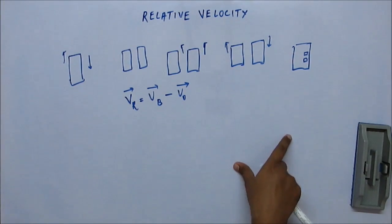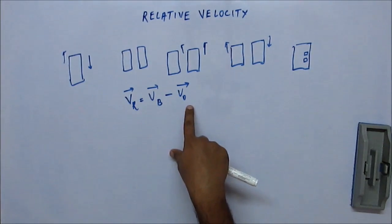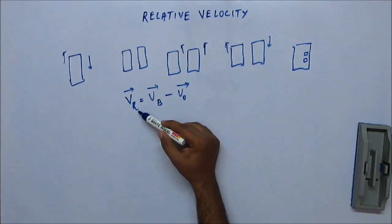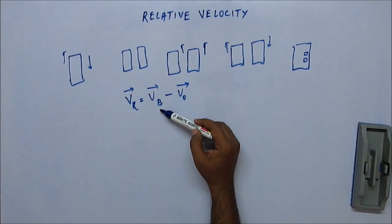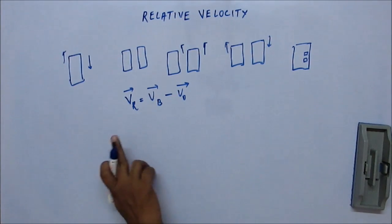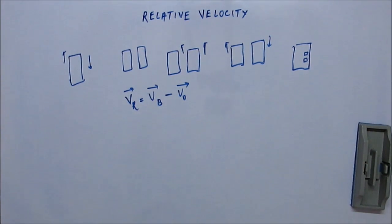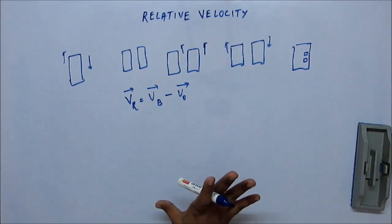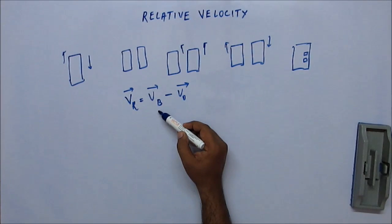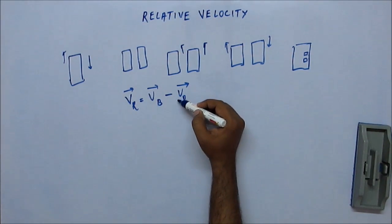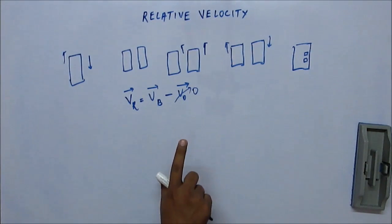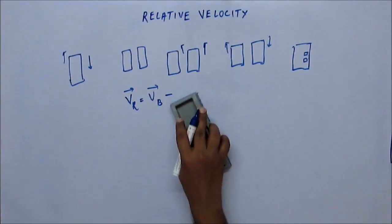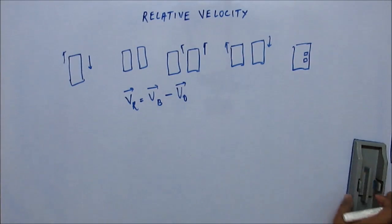Let's cross-check this formula with each of the situations we have discussed. The relative velocity of body B with respect to observer O is: velocity of B minus velocity of the observer. First, if we are standing on a platform — we are stationary, the earth is stationary — and the train is moving, whatever the speed of the train is, it will appear to move with that same speed, because the observer's velocity is zero. So for a stationary observer, the speed of the body is the same as the speed of the body with respect to the observer.